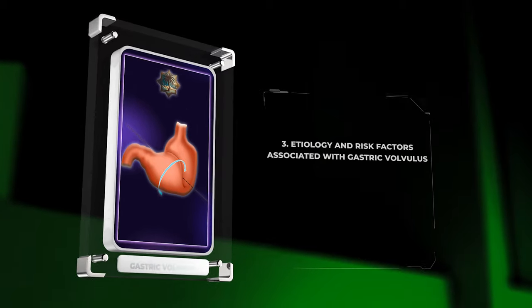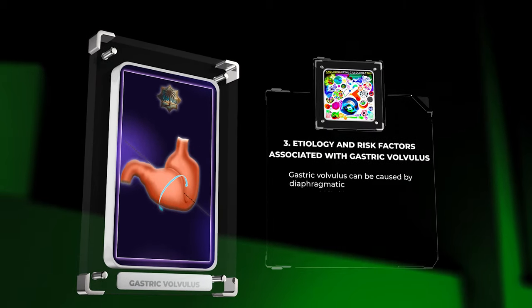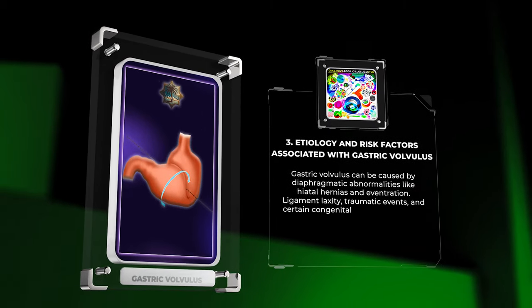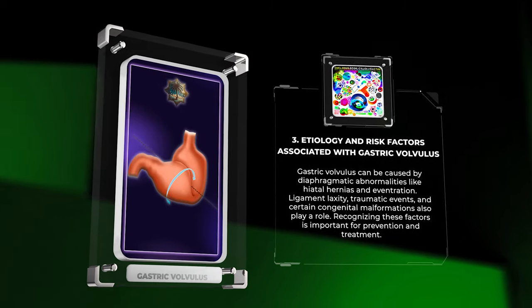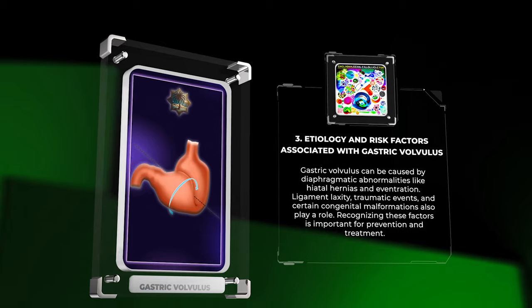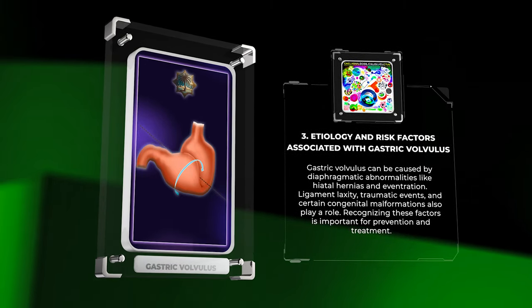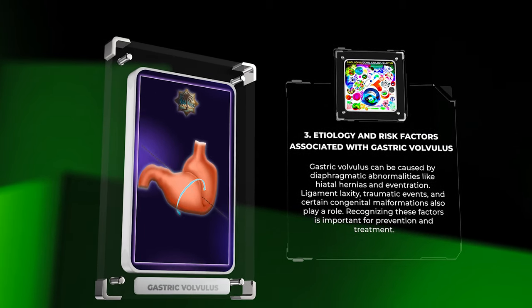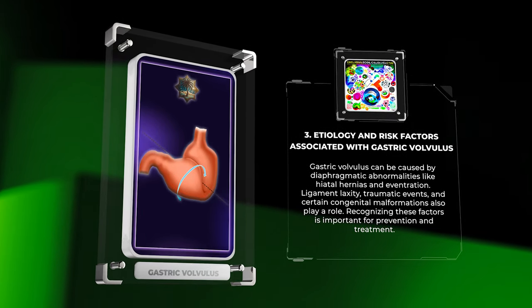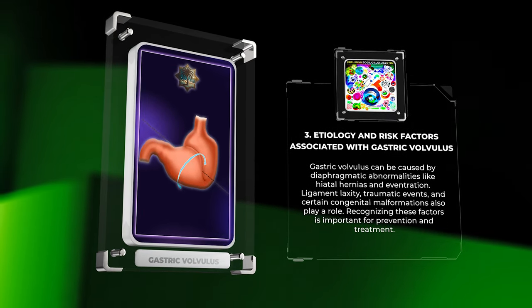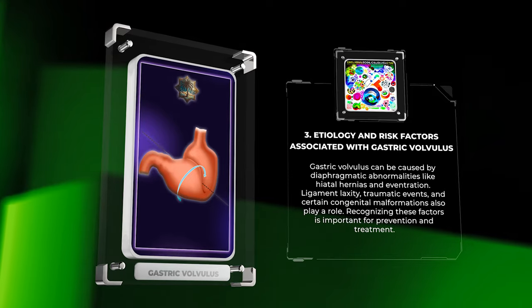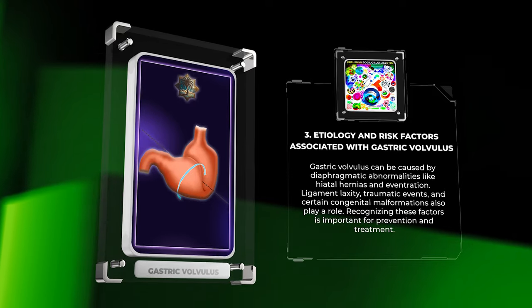Gastric volvulus can be caused by diaphragmatic abnormalities like hiatal hernias and eventration. Ligament laxity, traumatic events, and certain congenital malformations also play a role. Recognizing these factors is important for prevention and treatment.